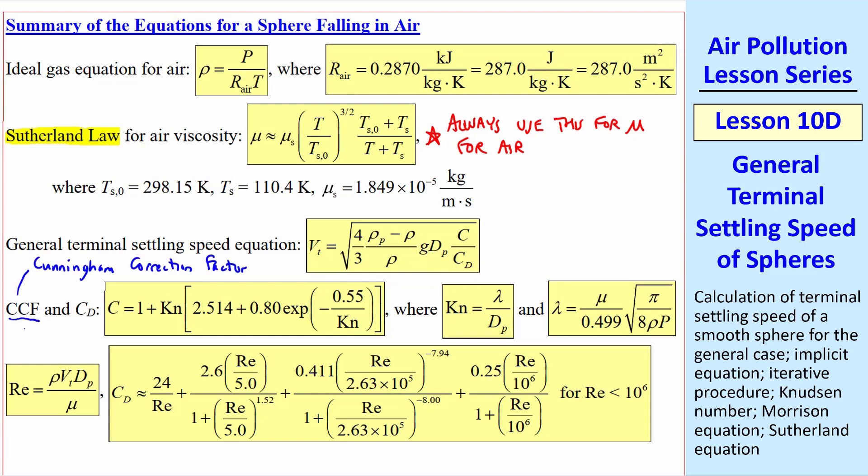Here's the equation for vt that we just gave above. CCF is the Cunningham correction factor, given the symbol C, which we discussed in a previous lesson.